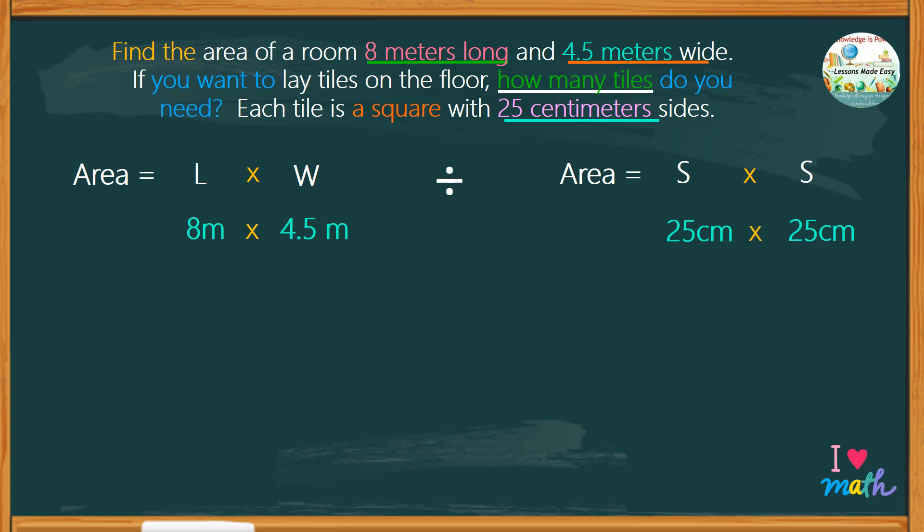Let's work on these numbers. First, let's find the area of the floor. We can't divide quantities of different units. Therefore, the unit in meters must be converted to centimeters. 8 meters would be 800 centimeters, and 4.5 meters is equivalent to 450 centimeters. It means the area of the floor is 360,000 square centimeters.